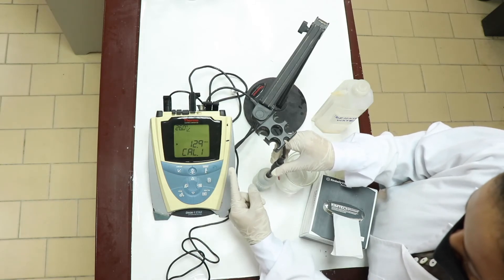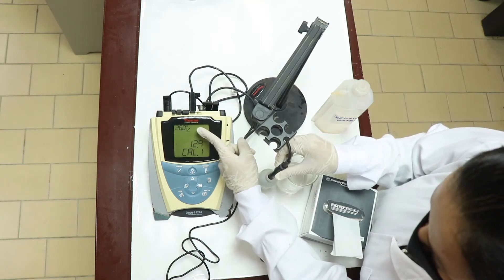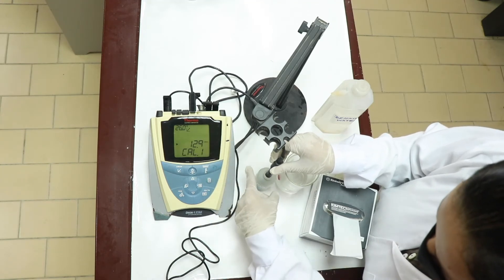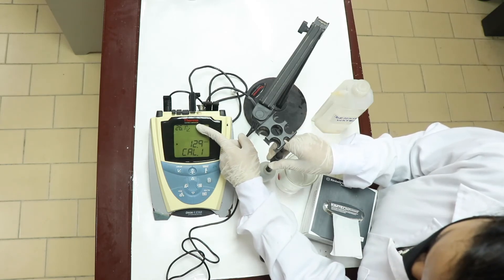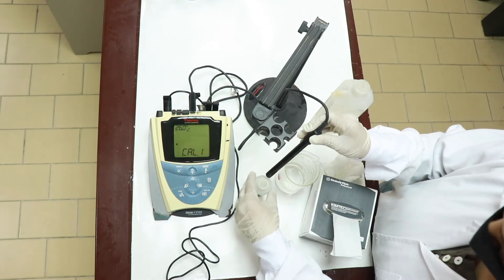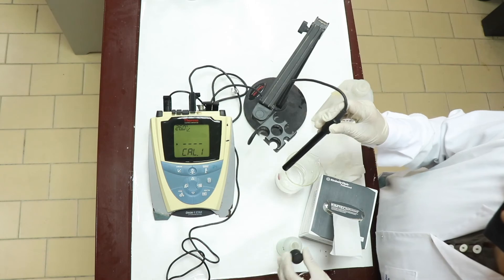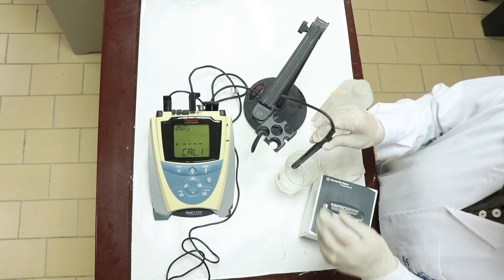Also, you have to note that conductivity is always temperature dependent. You have to note the temperature, the performing temperature what is appearing on the screen. Always note down the temperature. The step of calibrating the instrument is over. We can just wash the electrode again. Pat dry.